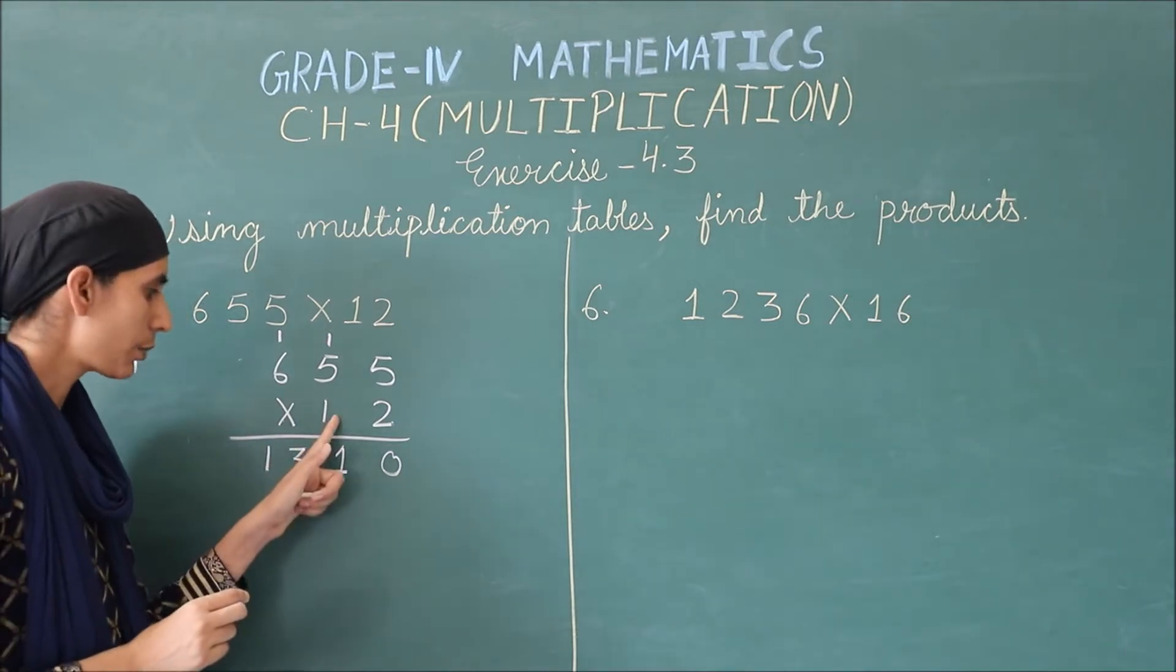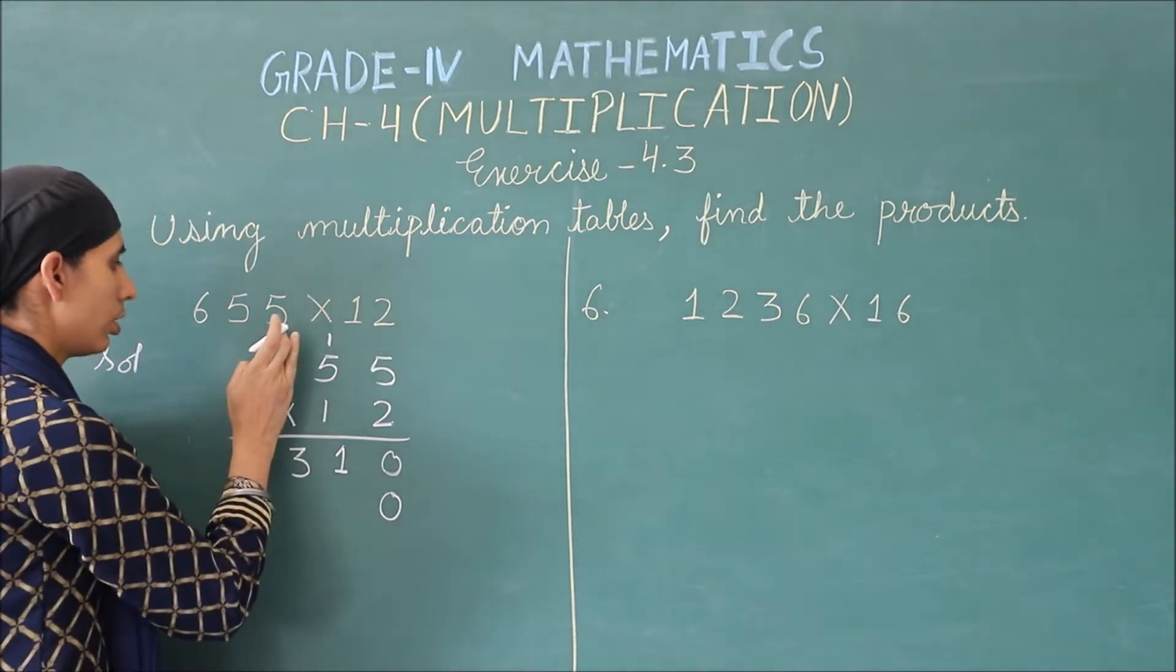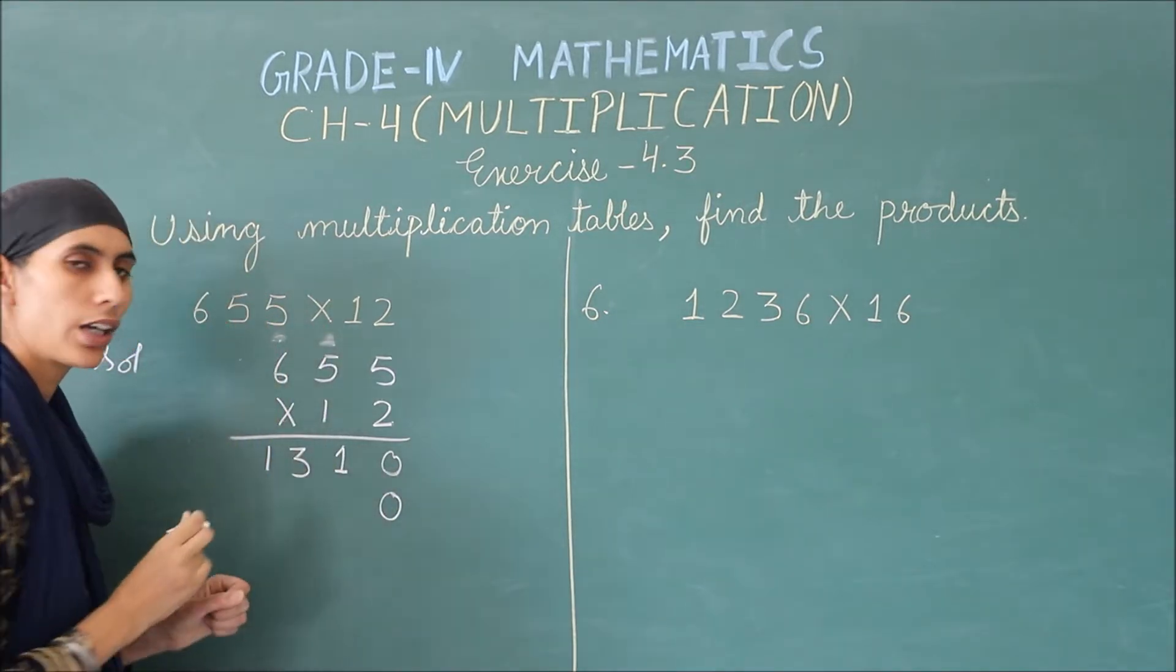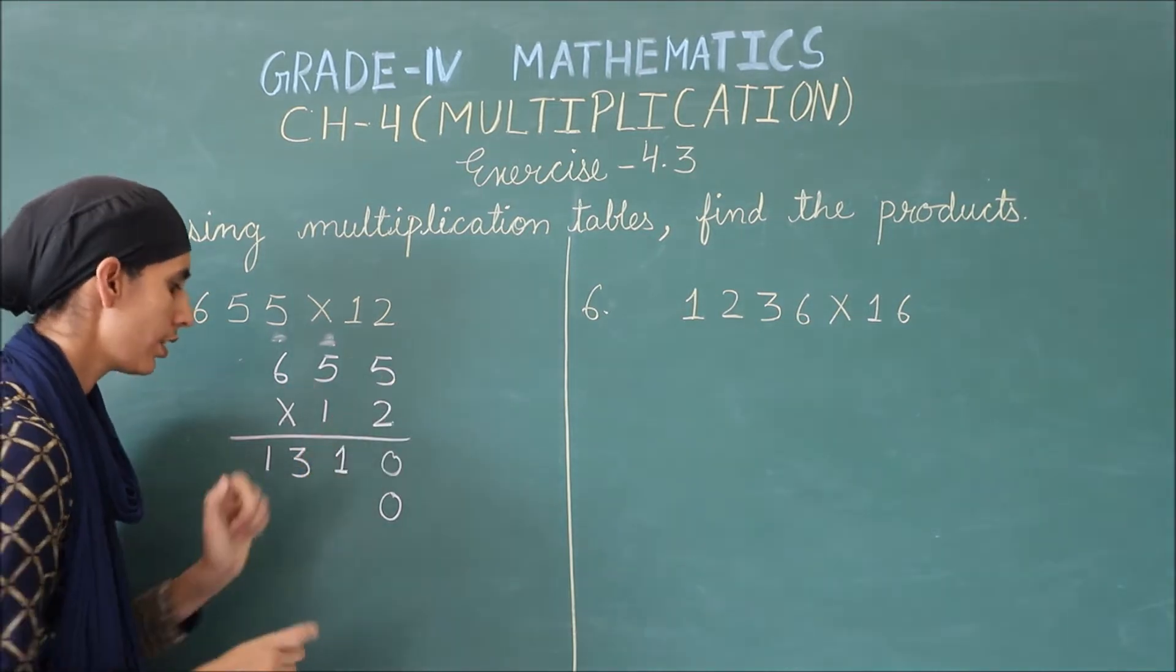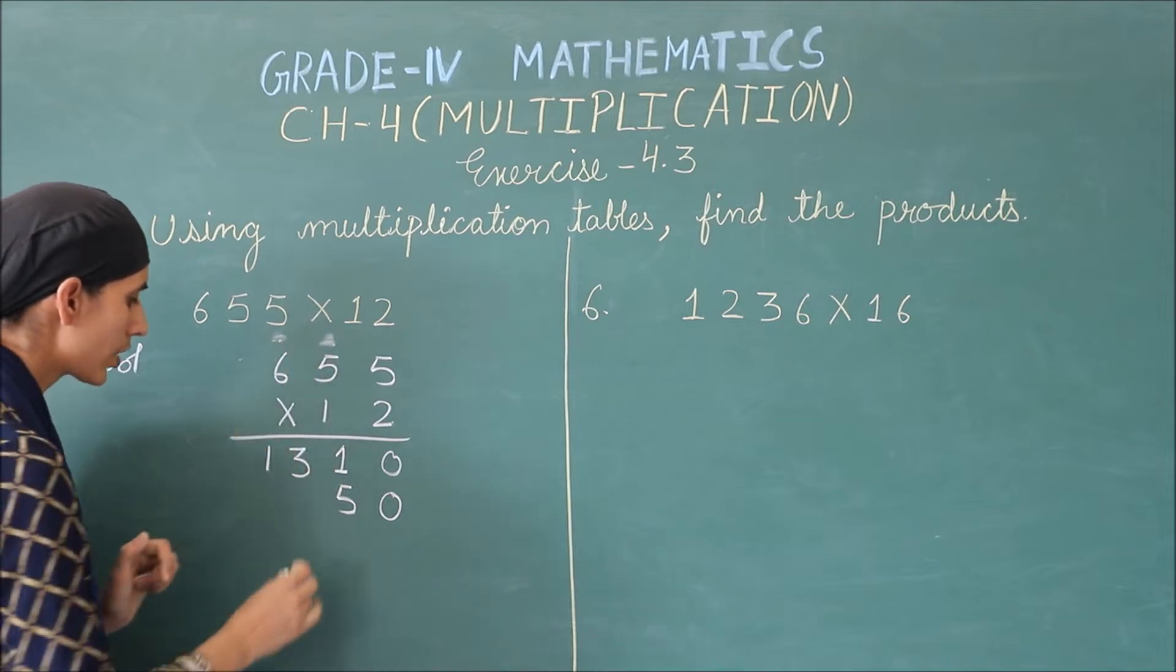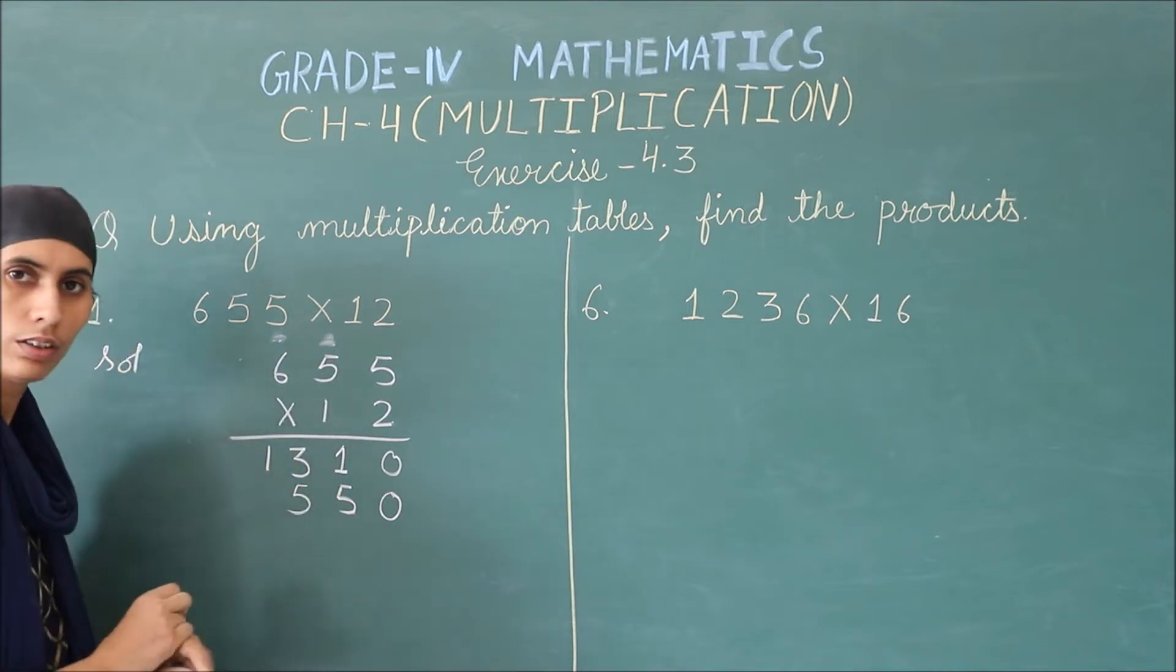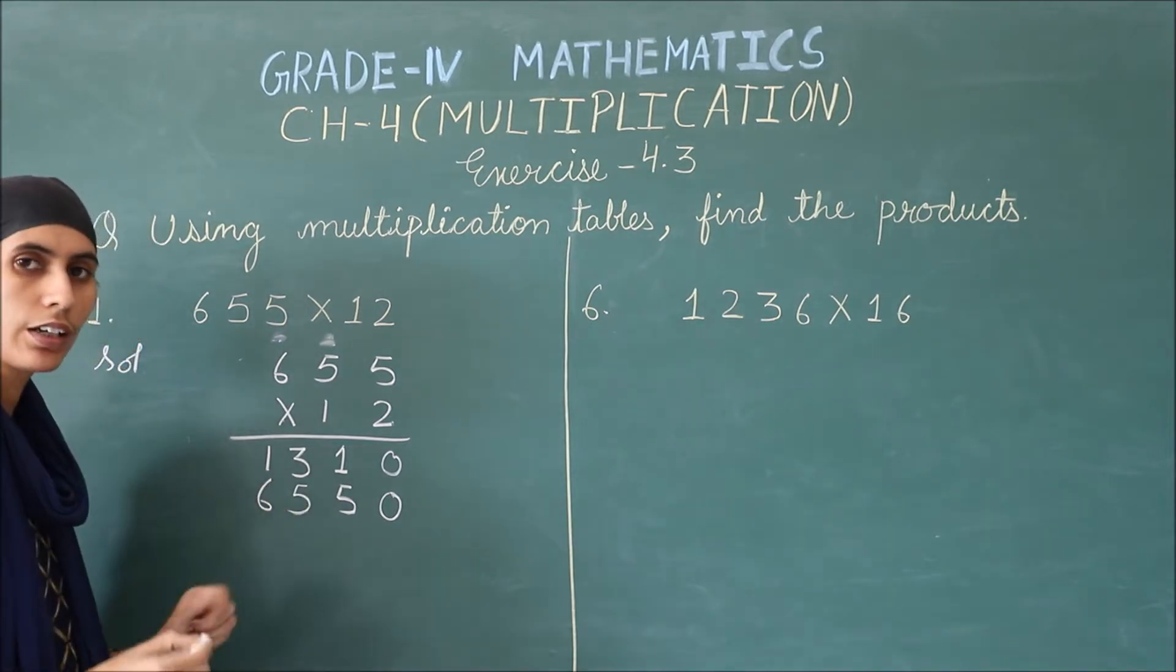Now we have to multiply with the next number. First, erase the carries because we are taking the next number. 1 times 5 is 5. Then, again 1 times 5 is 5. 1 times 6 is 6.